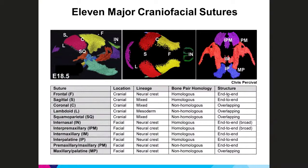For example, the frontal suture, indicated here between the yellow frontal bones in the middle panel, is derived from neural crest — both the suture mesenchyme and the bones. In contrast, the coronal suture is between the neural crest-derived frontal bone and the mesoderm-derived parietal bone, and the suture mesenchyme itself is derived from mesoderm.